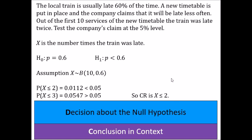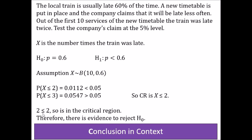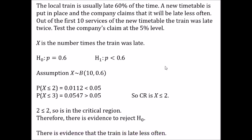We then look at our test statistic. The test statistic is how many times the train was actually late — it was late twice, so our test statistic is 2. Two is indeed less than or equal to 2, so it is in the critical region. Therefore there is evidence to reject the null hypothesis. In context: there is evidence that the train is late less often.